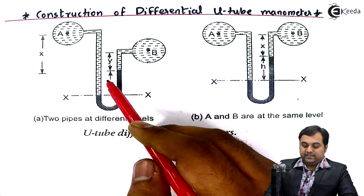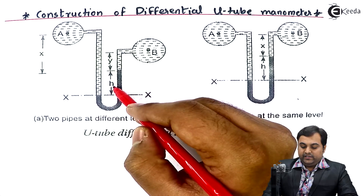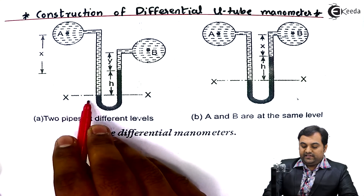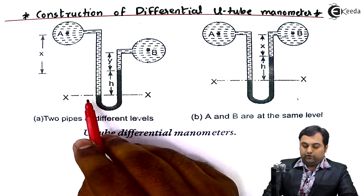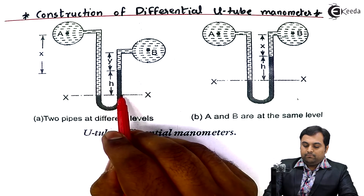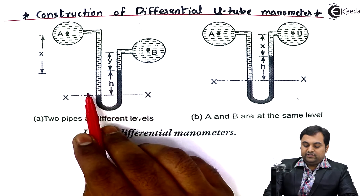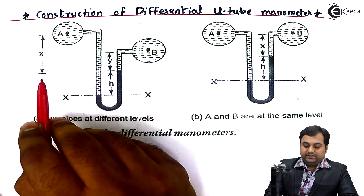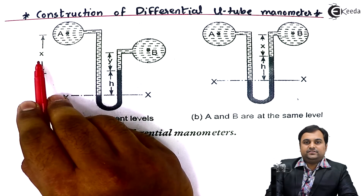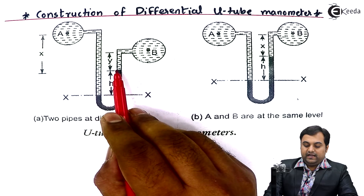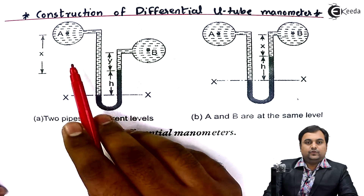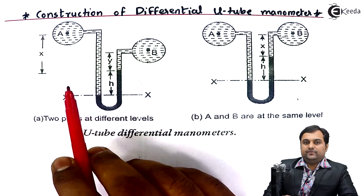Once the fluid enters the left and right limbs, both fluids are balanced and the height is adjusted. H indicates the difference in level of mercury between the left and right limbs. The reference level is taken as XX. In the left limb there is no mercury above XX, but in the right limb mercury rises to height H. The distance from the mercury level to the center of pipe A is x, and to the center of pipe B is y. Using these notations, we can calculate the pressure difference.